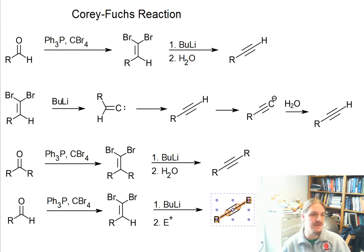The Corey-Fuchs reaction takes an aldehyde, so this is a different kind of starting compound than we've seen in some of the other videos. It reacts with triphenylphosphine and carbon tetrabromide. This makes a 1,1-dibromoalkene, which then reacts with butyllithium followed by aqueous workup to form a terminal alkyne.